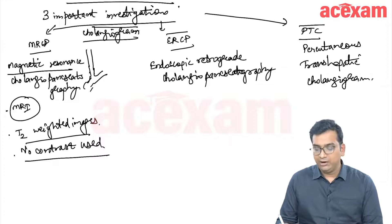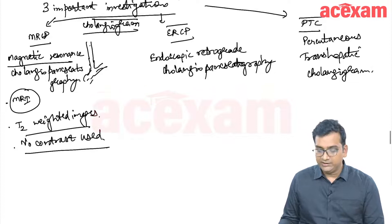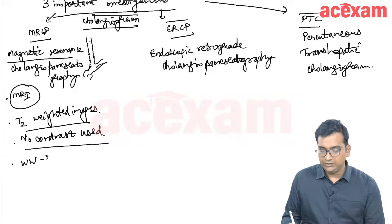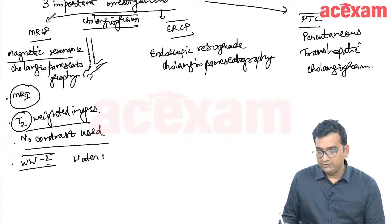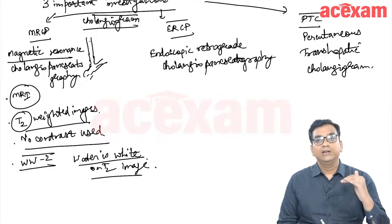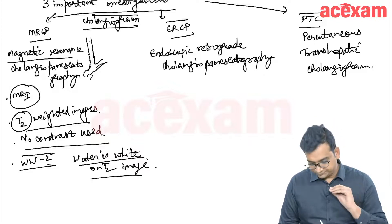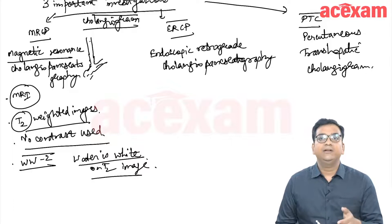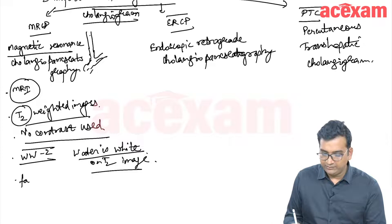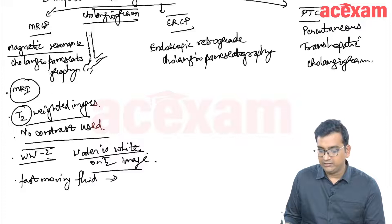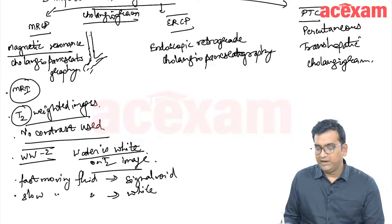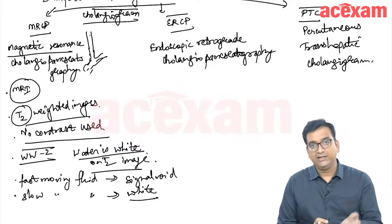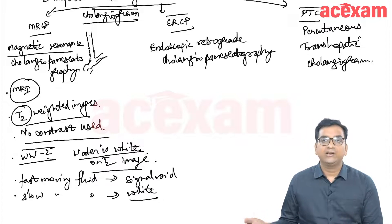If we are not using any contrast, how are we able to see the bile duct as well as the pancreatic duct and ampulla? There is a concept — using the mnemonic of World War II — that water is white on T2 weighted images. If there is fast moving fluid, there will be a signal void; if there is slow moving or stagnant fluid, it will appear white on T2 weighted images. Bile and pancreatic juice are slow moving fluids, and that is why they appear white on MRCP. No contrast is required.